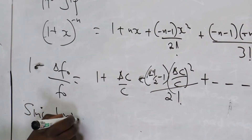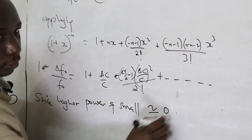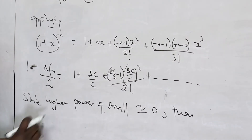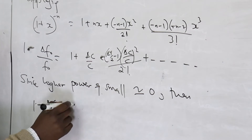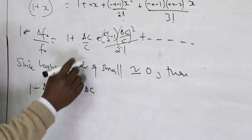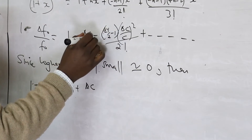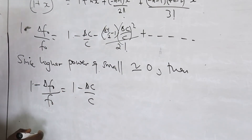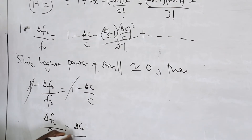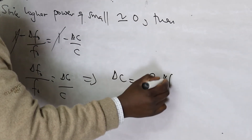Since higher powers of small changes are approximately zero, then 1 minus δF₀ over F₀ is supposed to be 1 minus δC over 2C. This one and this one cancel, so δF₀ over F₀ is equal to δC over C.